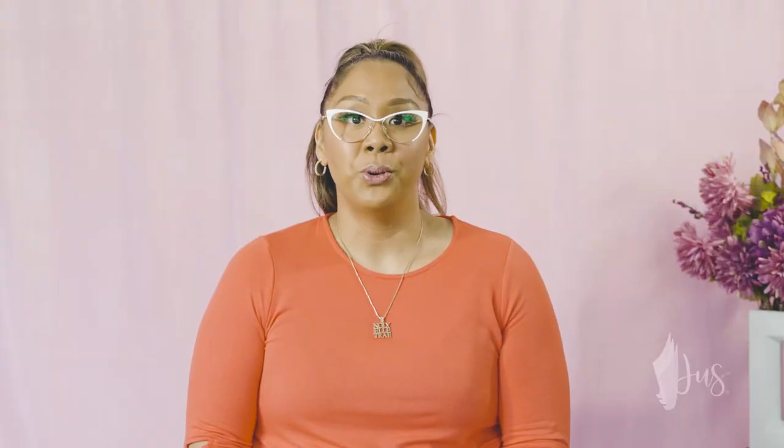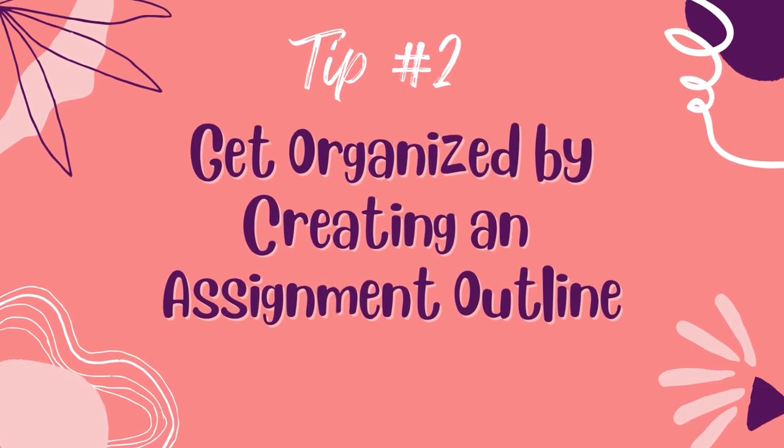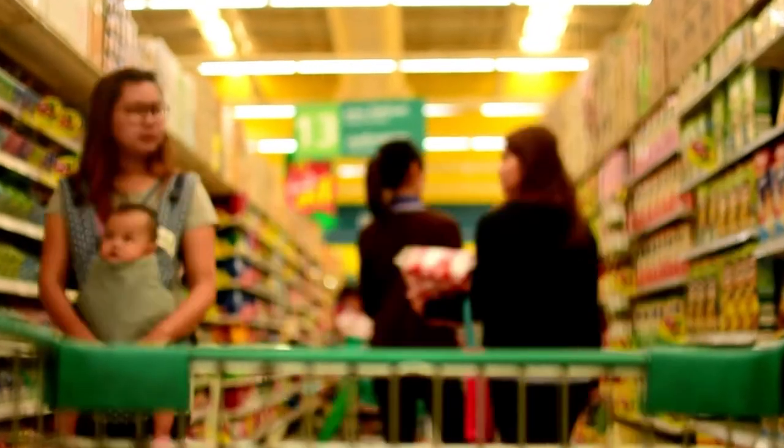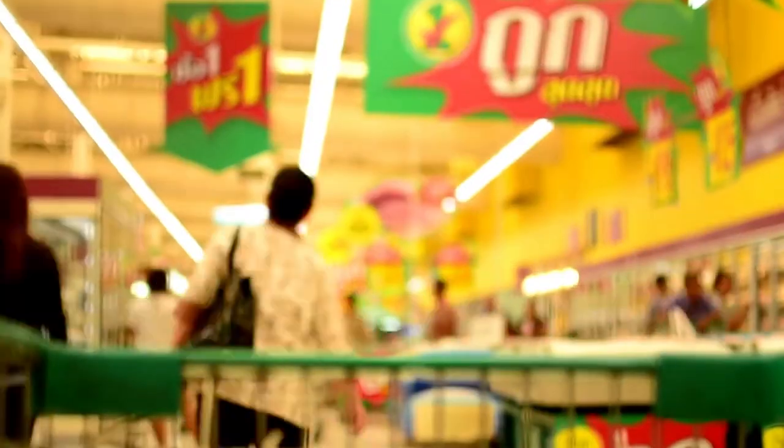Tip number two: get organized by creating an assignment outline. Tip number two is to get your thoughts organized by creating an outline. It's like going into the grocery store without some idea of what you want to get — more than likely you're going to walk out with either too much or not enough. If you don't have a game plan, trust me, it's happened to me before. I tell students to create an assignment template that includes which topics or areas to discuss and some initial ideas about what you want to include.